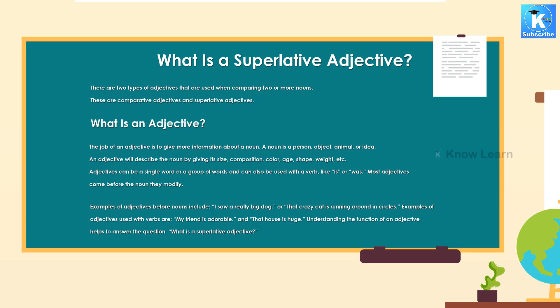What is a superlative adjective? There are two types of adjectives that are used when comparing two or more nouns. These are comparative adjectives and superlative adjectives.